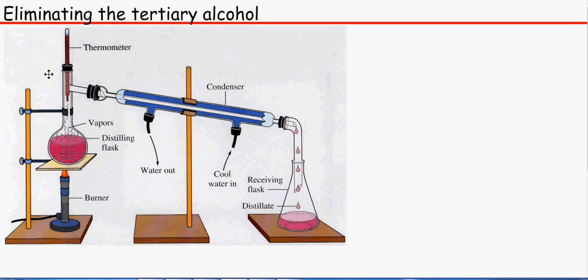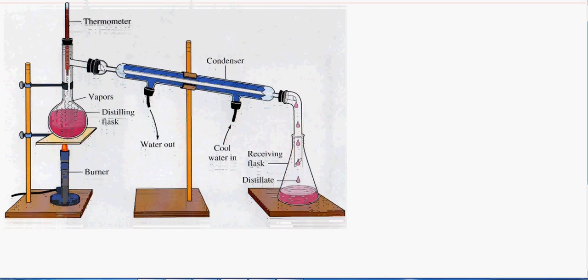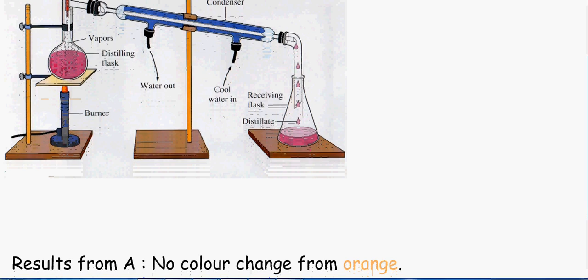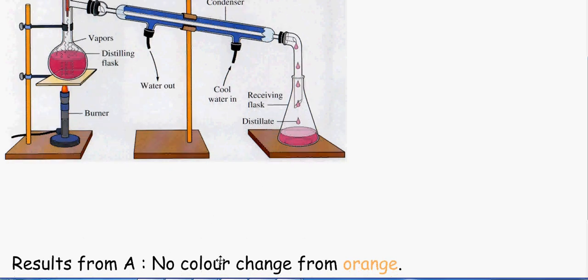So we put test tube A in there and distill it off. But the result from A is that there is no colour change from orange, because the oxidising agent, the Cr2O7 slash H plus was orange in colour, there was no change in orange.